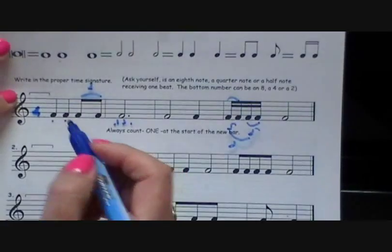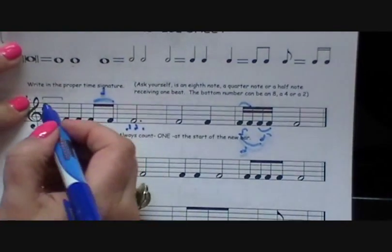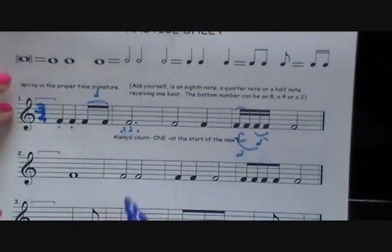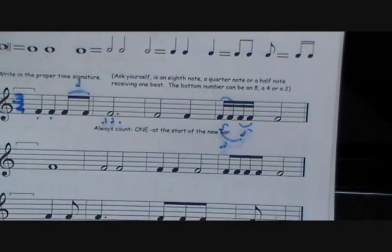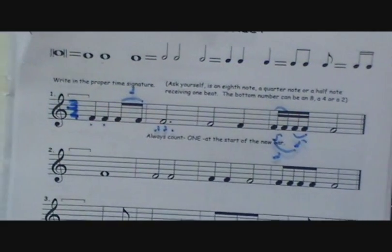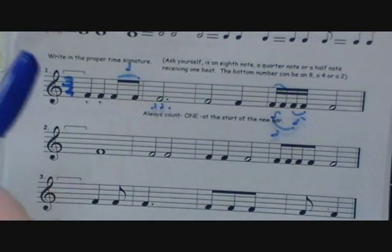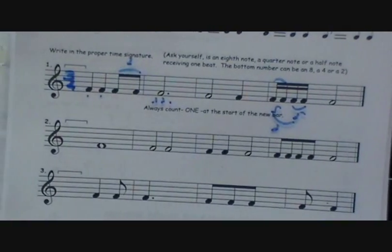So we're safe to say here that the quarter note was making the beat. Okay, because the bottom always tells us who's getting the beat. And the top is telling me how many beats are in each measure. Okay, so the bottom, who's getting the beat? The top, how many beats in each measure?